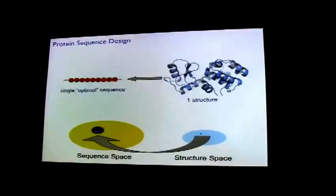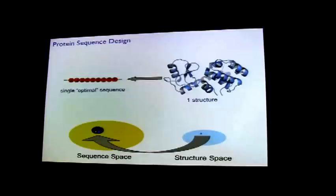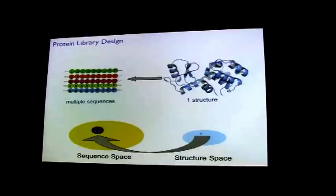What we're interested in is essentially the exact opposite — the inverse folding problem. We want to start with a structure and some function, then run a calculation to give an optimal amino acid sequence. This is the inverse mapping: starting in structure space and finding some sequence or set of sequences in sequence space, all of which will give rise to the target structure. This is an easier problem because the inverse mapping is highly degenerate — there are many sequences that all give rise to the same target structure.